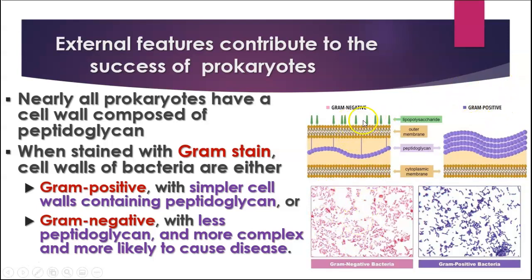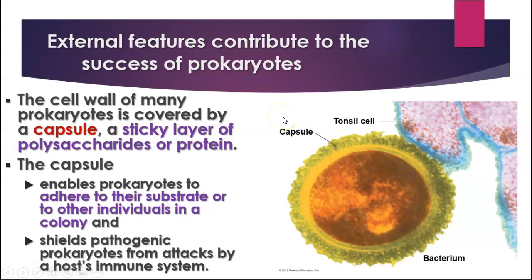There are diseases caused by both gram negative and gram positive bacteria. Gram negative ones are sometimes a little bit harder to treat — only specific antibiotics work well on those. The cell walls of a lot of prokaryotes, especially the infectious ones, are covered by capsules. Capsules are a sticky layer of polysaccharides or proteins that allows them to stick to a surface. In pathogenic ones, it helps them hide from the host immune system. This picture shows a coccus with a capsule attached to a cell in your tonsils.